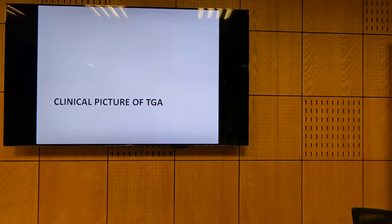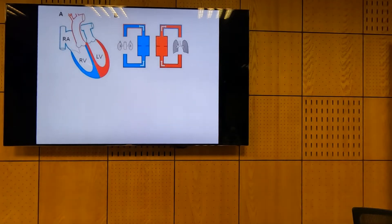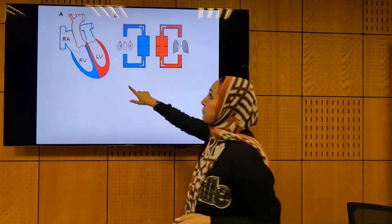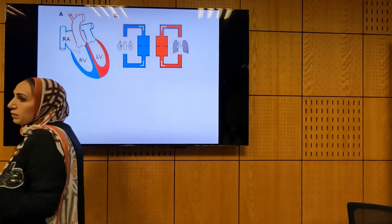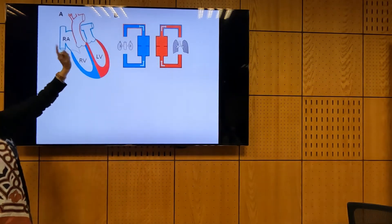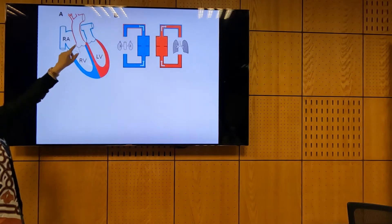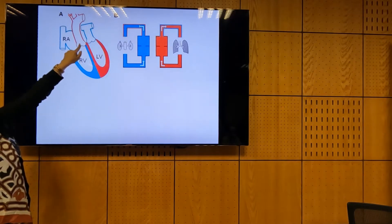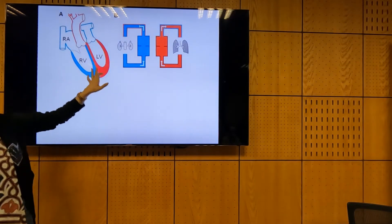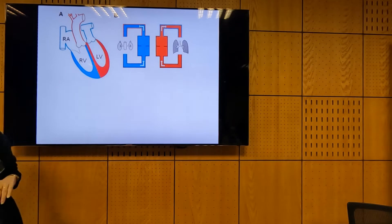What about the clinical picture of the TGA patient? To understand it, we have to go through some terminology. This is the TGA circulation — the left ventricle giving the pulmonary artery, which is the wrong artery — discordant. And this is the right ventricle giving the aorta, while the right atrium and right ventricle are normally connected.